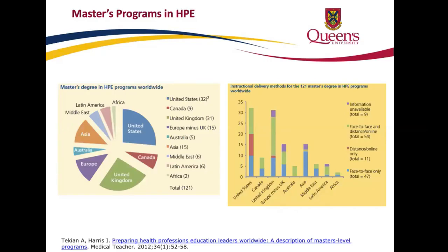There was a study in 2012 — with data from around 2010–2011 — where authors surveyed master's degrees in health professions education worldwide. You can see a relatively wide distribution across continents where these programs are offered. Back then there were nine programs in Canada, though the number is much higher now. The graph on the right shows a good mix of delivery modes — in-person, blended, and completely online.